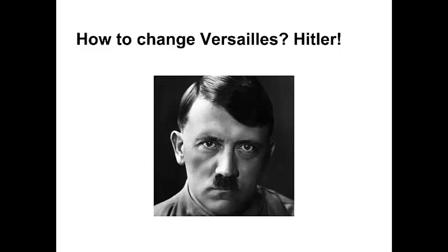Hitler comes to power in 1933 using his charisma and the idea of German powerlessness and discontent, which was caused in part by the Great Depression. He blamed internal enemies of Germany as he saw them — those being Jews, communists, and liberals of all sorts — and also blamed external forces: Poland, France, Austria, Hungary, Yugoslavia, and Czechoslovakia as not having done their part in the war to support Germany.